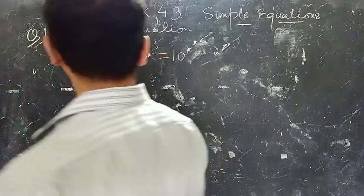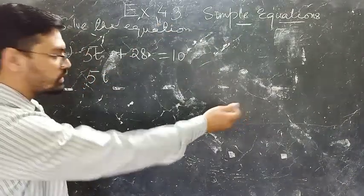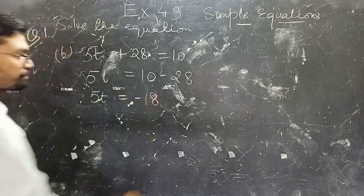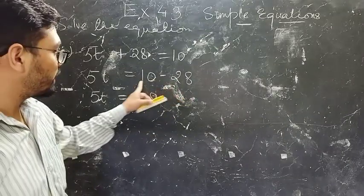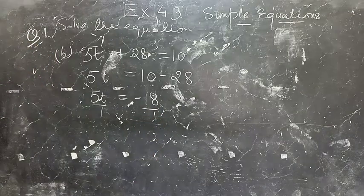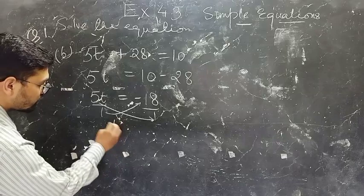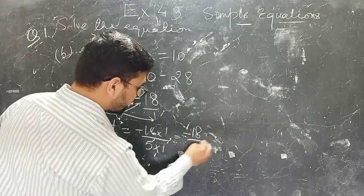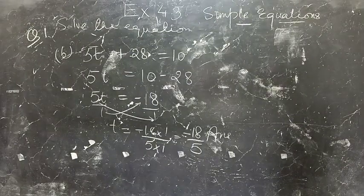Part B: 5T plus 28 equals 10. Same concept — take 28 to the RHS, it becomes minus 28. So 5T equals 10 minus 28, which is minus 18. The number with the greater magnitude carries the negative sign. Take 5 to the denominator to make T alone. T equals minus 18 divided by 5. This is the value of T.